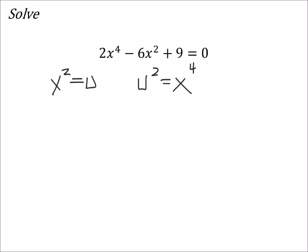Let's see what that does for us. So, that would give us 2u squared minus 6u plus 9 equals 0.